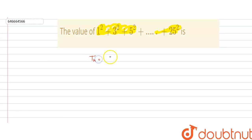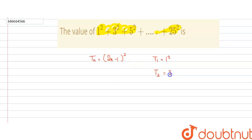The nth term of this series can be given by (2n − 1)². When we put n = 1, we get (2×1 − 1)² = 1². When n = 2, we get (2×2 − 1)² = 3². When n = 3, we get (2×3 − 1)² = 5². So the nth term is confirmed to be (2n − 1)².